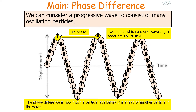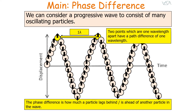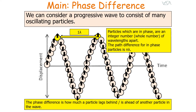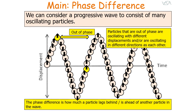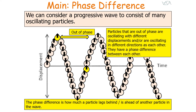Two particles which are one wavelength apart are always considered to be in phase. Two points which are one wavelength apart have a path difference of one wavelength. Particles which are in phase are an integer number of wavelengths apart, so the path difference for in-phase particles is nλ. The phase difference of particles in phase is n·2π radians, as there are 2π radians in one wavelength. Particles that are out of phase oscillate with different displacements and/or in different directions.